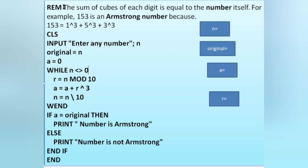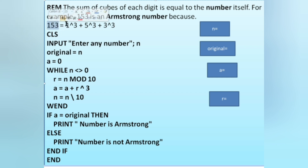What is an Armstrong number? An Armstrong number is one where the sum of the cube of each digit equals the number itself. For example, 153 is an Armstrong number because 1³ + 5³ + 3³ = 153. Note: for three digits we use cube (power 3), and for four digits we would use power 4.